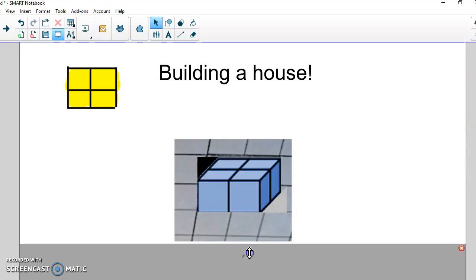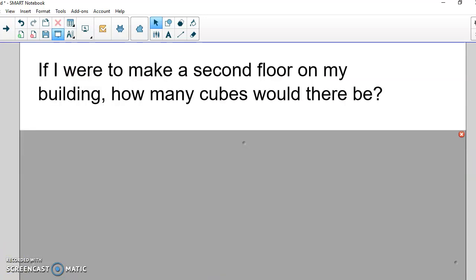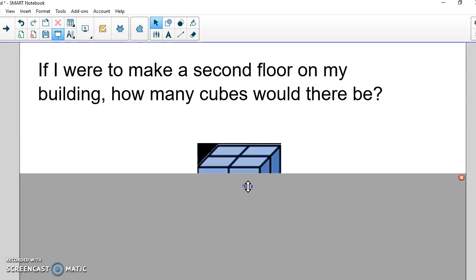Now, using our cubes, we're going to build the first floor. Think of the first four cubes as the ground floor of our building. But now we want to build a second floor by putting four cubes on top. How many total cubes would there now be? I hope you think there'd be eight.